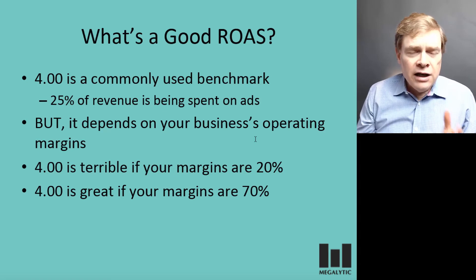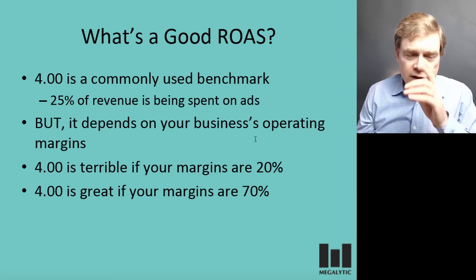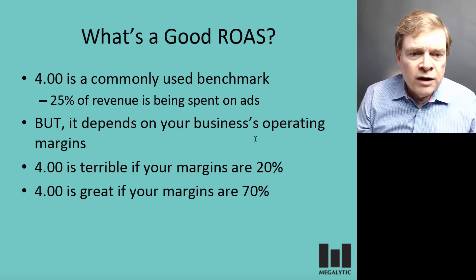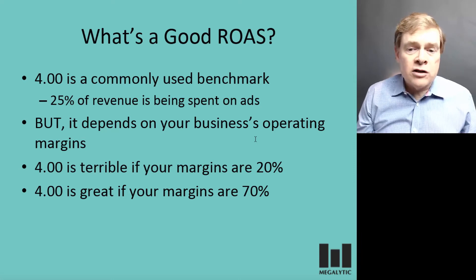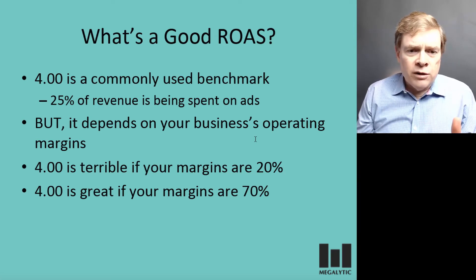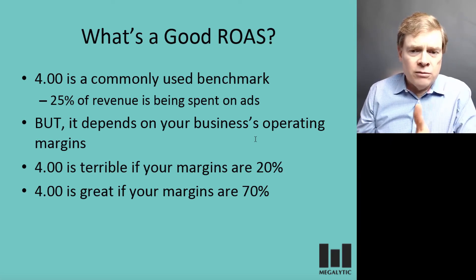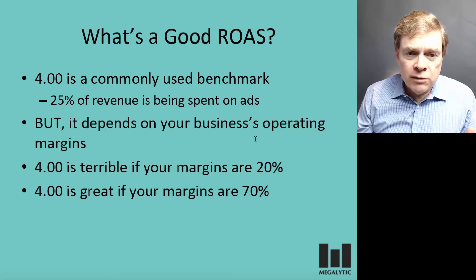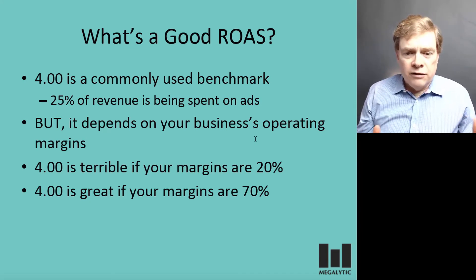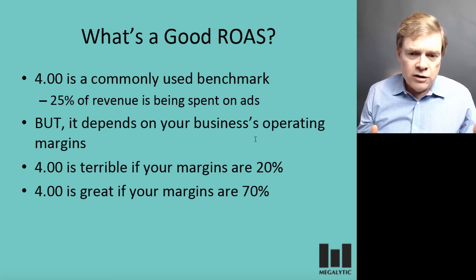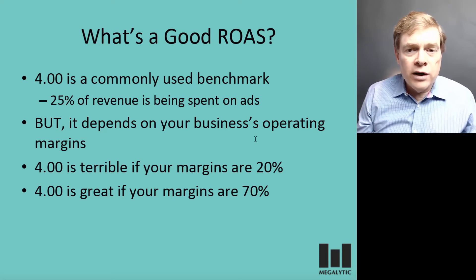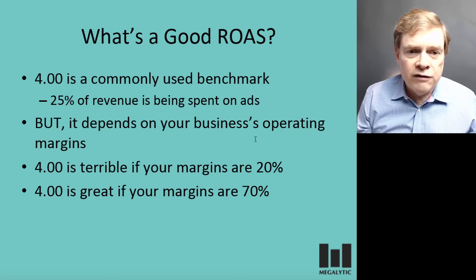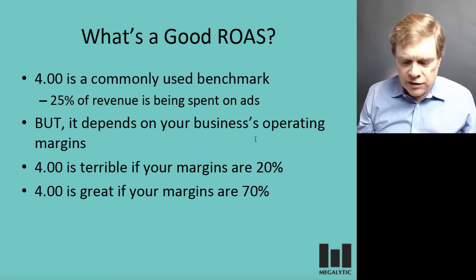Whether that's really good depends on your business and your operating margins. For example, if your operating margins are 20%, then a 4.0 ROAS is terrible because you're spending 25% of your revenue on ads but your margins are only 20% — you're already losing money. However, if you're selling something very profitable with margins of 70%, then a 4.0 ROAS is great and you're still making a lot of money even after spending 25% of revenue on advertising.